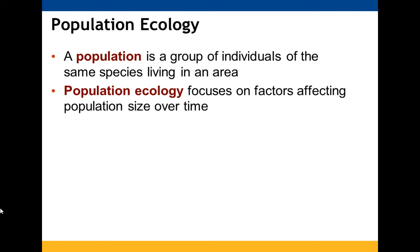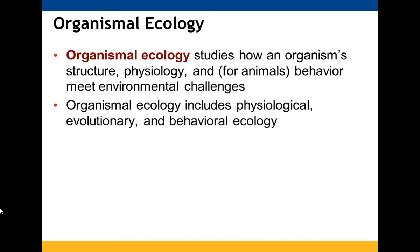A population is a specific group of individuals of the same species in a certain area, and population ecology looks at factors that affect their size — meaning the numbers of members — over time, from embryos or hatchlings to full-blown adults. Organismal ecology looks at how an organism's physical structure, physiology, and for animals specifically behavior, help deal with environmental challenges. This can involve all of those different types of ecology under the larger umbrella of organismal ecology.